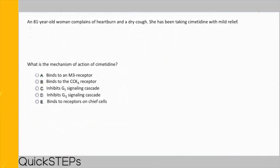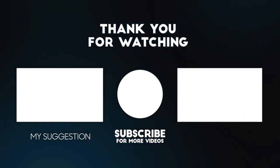For the final question, an 81-year-old woman complains of heartburn and dry cough and has been taking cimetidine with mild relief. Cimetidine's mechanism of action is that it inhibits GS signaling on parietal cells as it is an H2 blocker — answer choice C. H2 receptor activation would normally signal through the GS cascade, but because cimetidine is a blocker, it inhibits GS signaling. You are responsible for knowing signaling cascades and second messenger molecules for most hormones and medications. That's it for this question set — please check out our other videos and I'll see you in the next one.